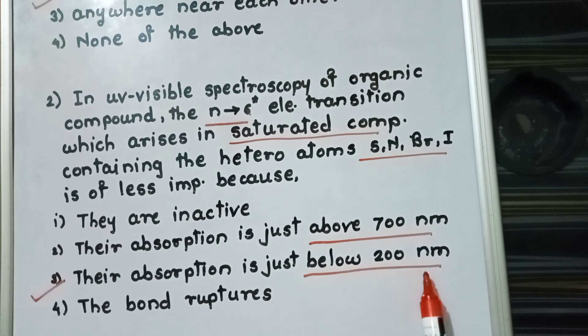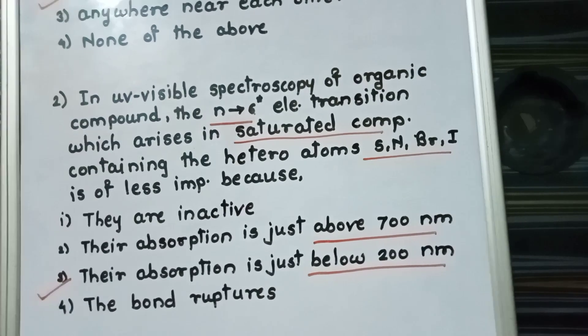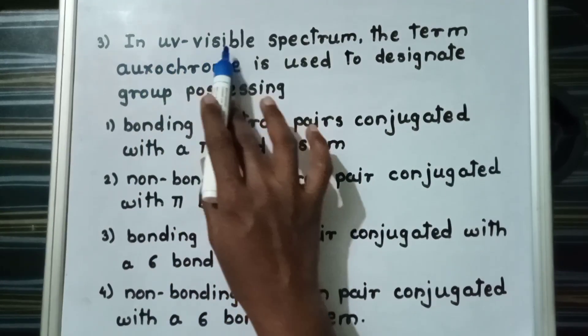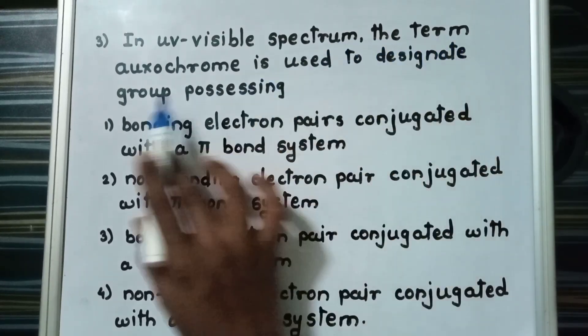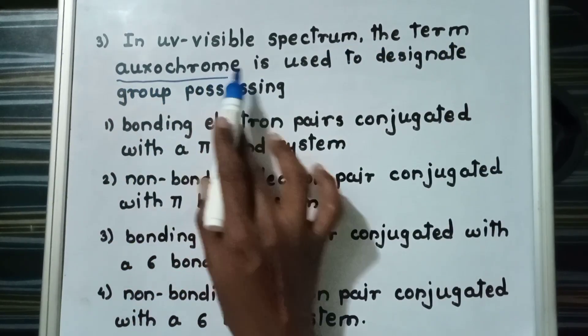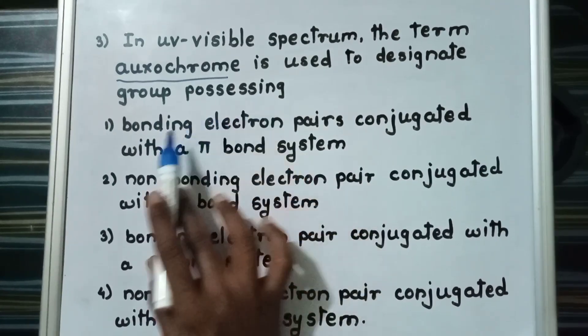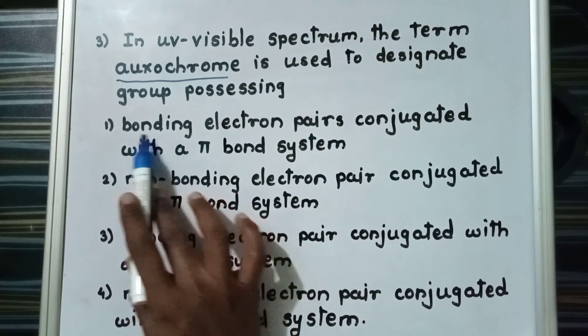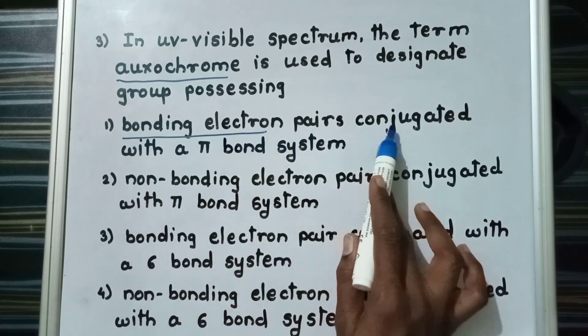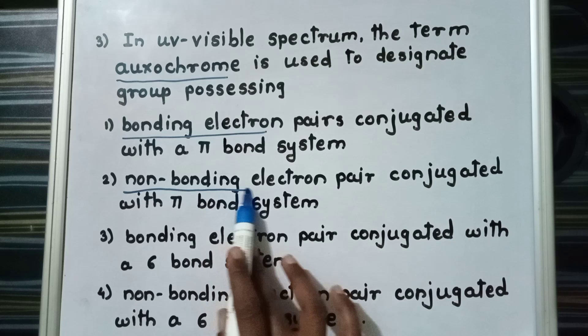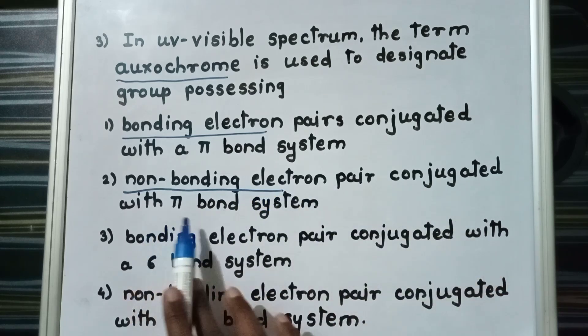Third question is that in UV-visible spectrum, the term auxochrome is used to designate group possessing. Options are bonding electron pairs conjugated with pi bond system, non-bonding electron pair conjugated with pi bond system...